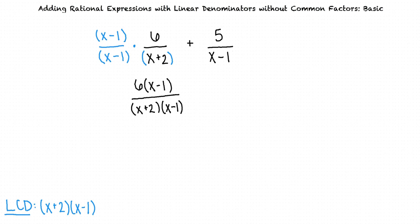Okay, so since the denominator in the second expression already has the factor x minus 1 and is missing the factor x plus 2, we can multiply the expression by x plus 2 divided by x plus 2, right?